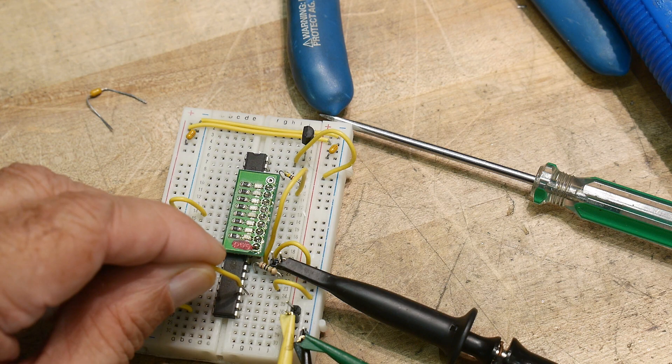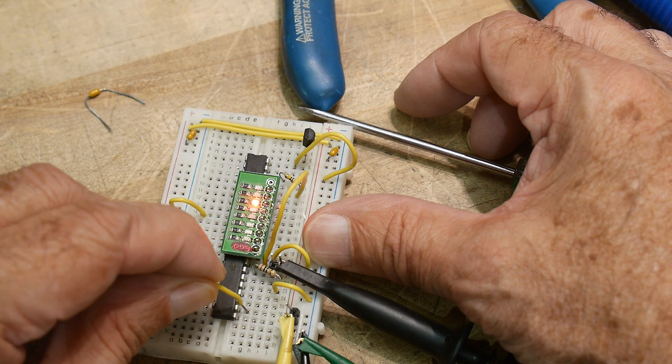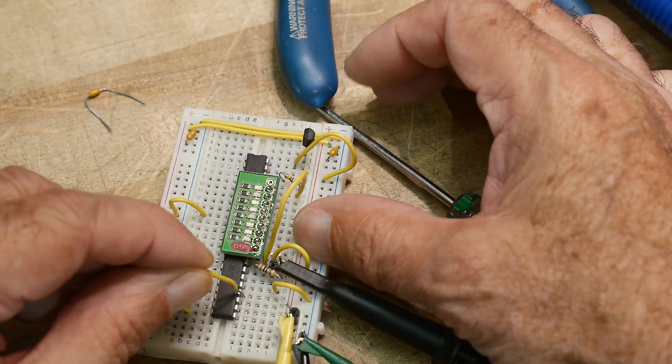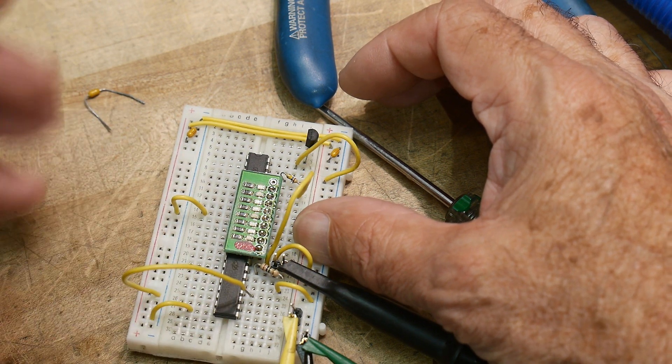So whenever I ground one of those data lines, it lights up that LED. So you can see that whatever thing I encode, I decode it. All right. And that's if the address is the same. Okay.